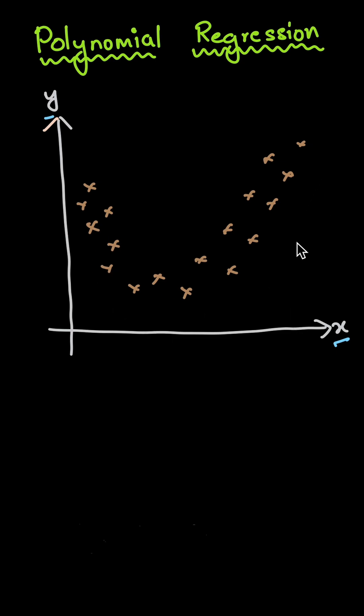For this specific data, if we are trying to fit a hypothesis using simple linear regression, then we'll be fitting a straight line that will look something like this. Why is the straight line looking like this? Because in simple linear regression, it will try to make the line as near to most of the points.